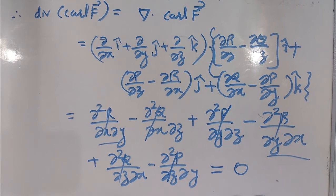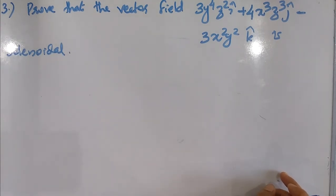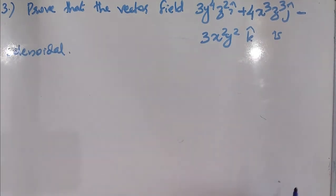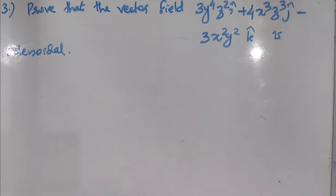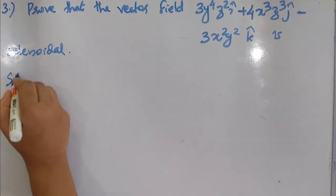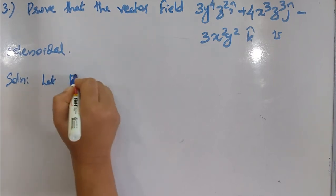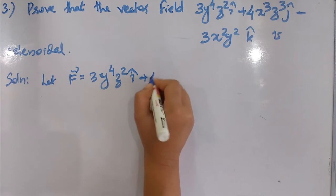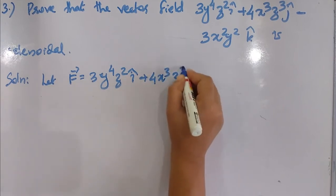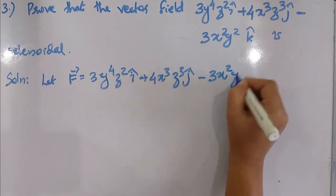For the next problem, vector F is given as F = Pi + Qj + Rk. The specific vector field to apply the model to is F = 3y⁴z²i + 4x³z³j − 3x²y²k. We need to show this vector field is solenoidal.